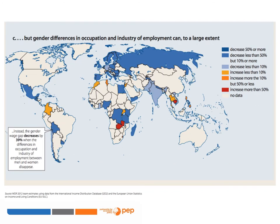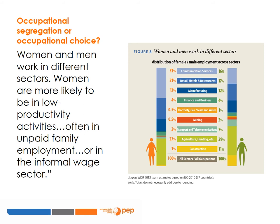Others argue that the gender wage gap is due to the occupations and industries in which men and women are engaged. And indeed, when these are controlled for, the gender wage gap decreases by 39% in Bolivia. But is this difference the result of occupational choice or occupational segregation? Feminist economists like Barbara Bergman, in a seminal article in 1974, argued that the choice is a constrained choice — women are tracked into lower-paying occupations. And as we have seen, when women spend more time in domestic work, they are likely to seek work in flexible occupations and industries which pay less.